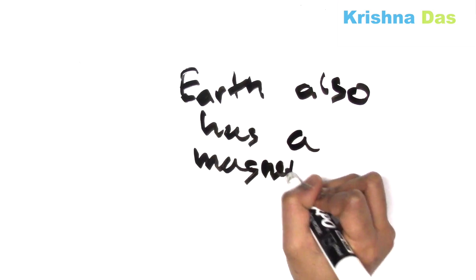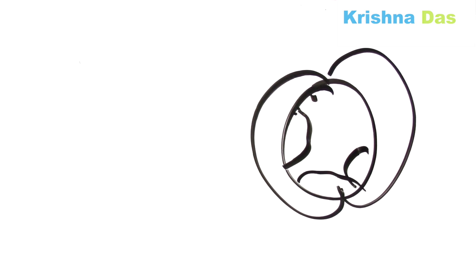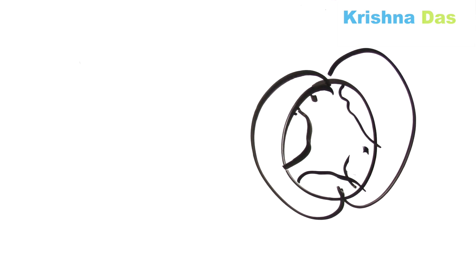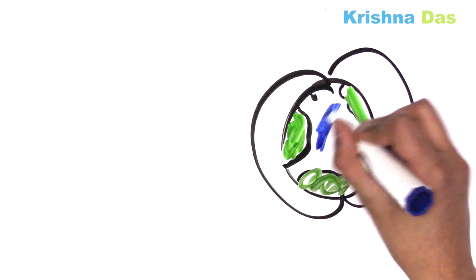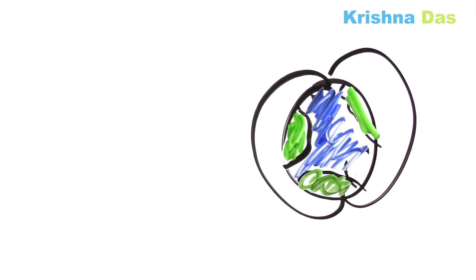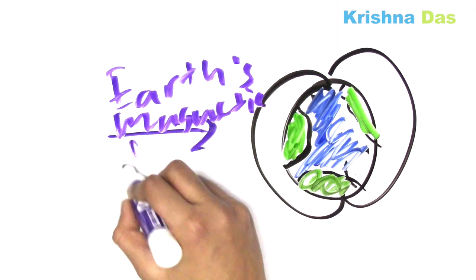The Earth also has a magnetic field. This is not exactly the magnetic field, this is my depiction of the Earth. The Earth has a magnetic field which is quite weak. We can't even distinguish it, but that's a depiction.